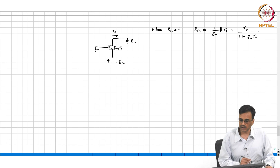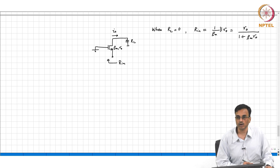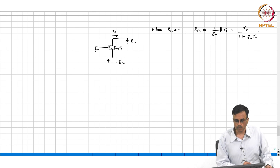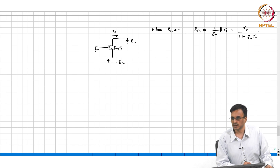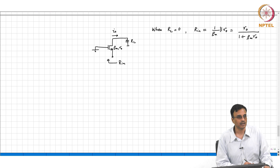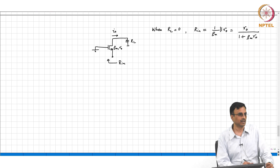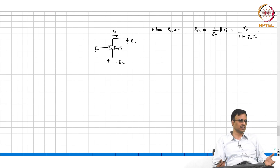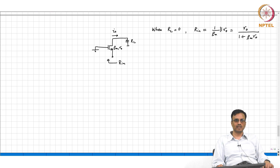Now, the question is what is the difference between this result and what we are looking for — R_in. How will we find R_in? You can either put a voltage source and measure current, or put a current source and measure voltage. It makes more sense to push a current and measure the voltage here because RL is in series with the transistor.